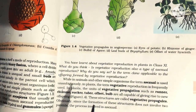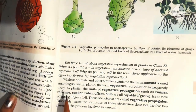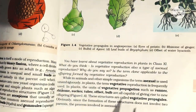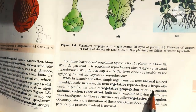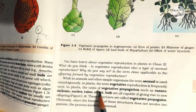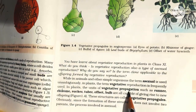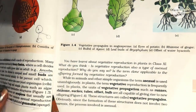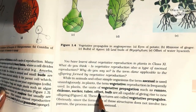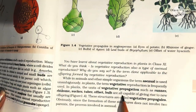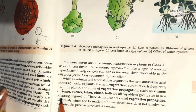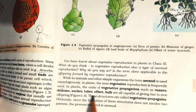In plants, the term 'vegetative reproduction' is frequently used. The units of vegetative propagation — such as runners, rhizomes, suckers, and offsets — are all capable of giving rise to new offspring.